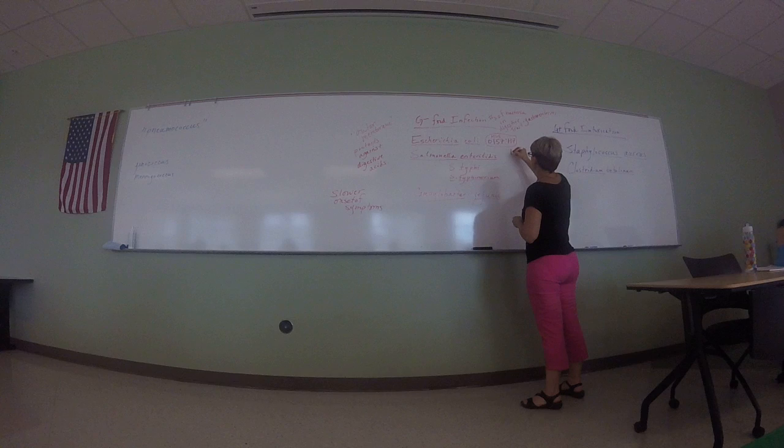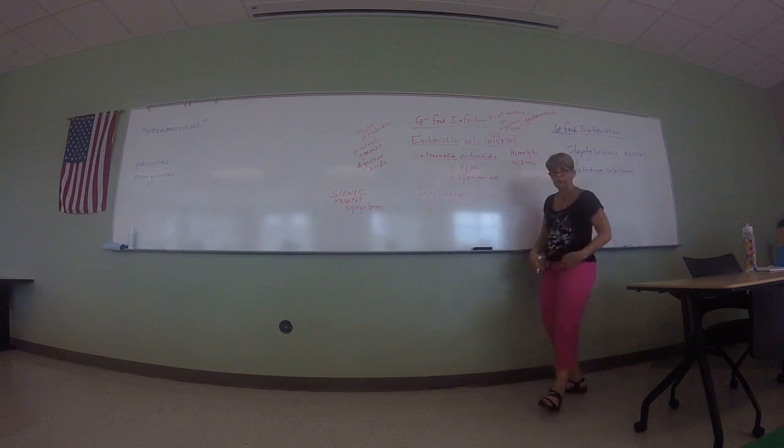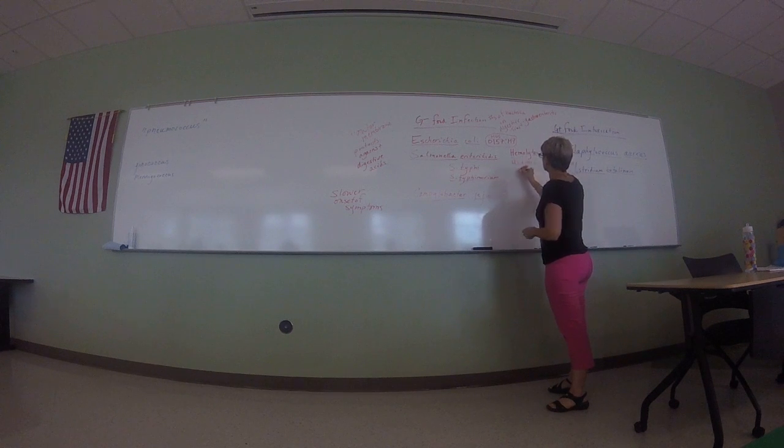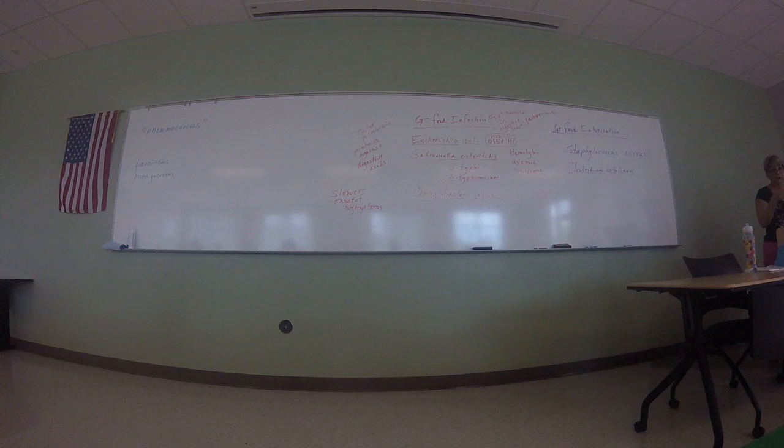I can write that on the board for you. Hemolytic - that means destroy blood cells, right? Uremic, which is your kidneys, your urea kidney. Hemolytic uremic syndrome, HUS. People die when their kidneys shut down. The O is an oligosaccharide antigen - remember oligosaccharide is kind of like a polysaccharide. Remember we talked about the outer membrane can have these lipopolysaccharides and stuff like that that's toxin, and the H is the antigen that stands for the hemolytic toxin.